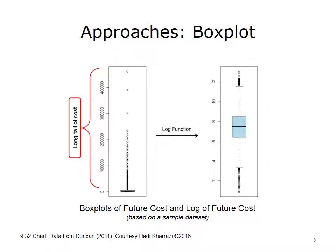A box plot can also be very informative to detect the distribution of the underlying population health variables. The log transformation of cost, as discussed in the previous slides, is shown by box plots in this figure. The left box plot shows the long tail of cost, while the right box plot shows the more distributed log-transformed version of cost. Note that a considerable number of outliers, represented by the dots at the two tails of the box plot on the right, still remain after the log transformation.